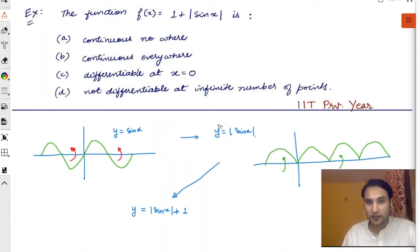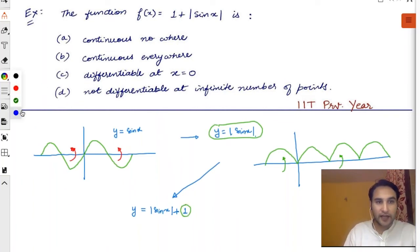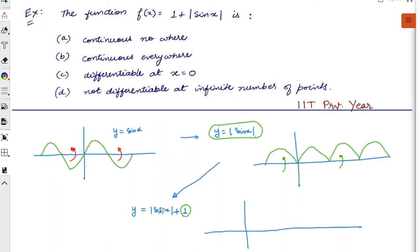Yes, so this is the graph of y is equal to mod sine x. Now when you add a plus one to the graph, what happens? The entire graph shifts up. When you add a plus one to a function, when you add a value one, what will happen? Think like this: the entire graph will shift up.